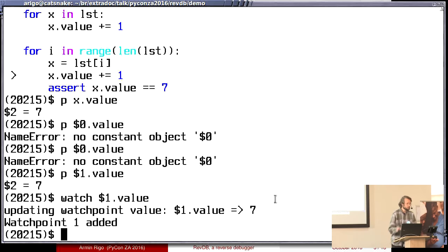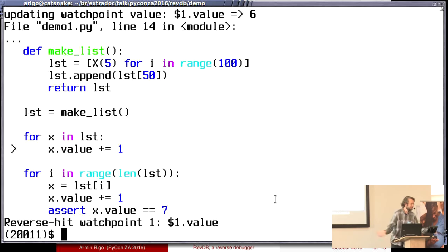Now I've set a watch point on the attribute value from this exact object, that is $1. Now it is watching $1.value, and I can do backward continue. And hop, that is the line that will change $1.value. Here it is saying, I'm updating my watch point because now $1.value is 6 before it was 7. Now I'm here. I can go backward again. Hop. I'm at the same point, but earlier in time. So it means the same object x is seen here twice in the loop. Now $1.value is 5.